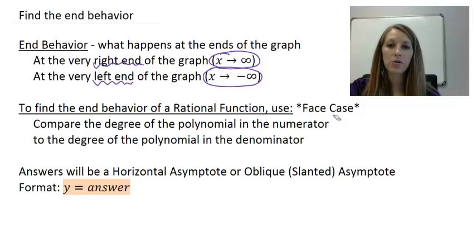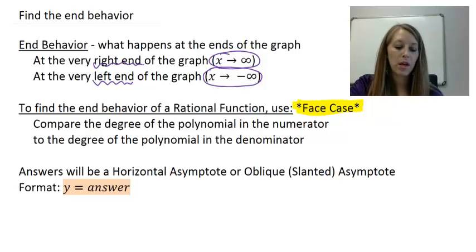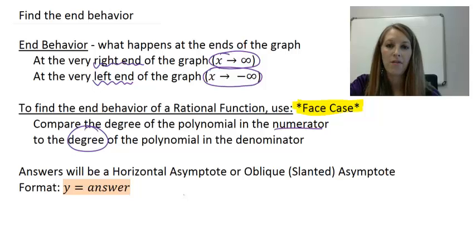Since we're in the rational equations video, the way to find the end behavior is by what I call the face case. And I'll show you why I call that a face case here in a second. The way the face case works is we look at the polynomial in the numerator and we compare its degree to the polynomial that we have in the denominator. And when I compare those two things, that will tell me what case I am going to be looking at.